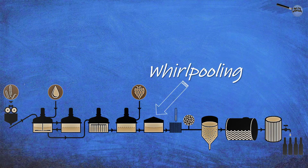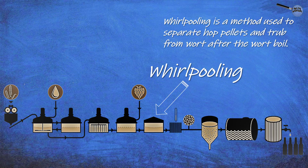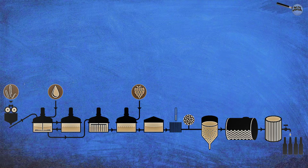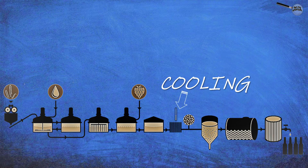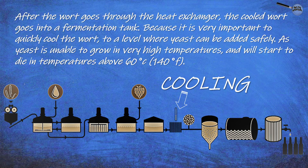Whirlpooling is a method used to separate hop pellets and trub from the wort after the boil. After the wort goes through the heat exchanger, the cooled wort goes into a fermentation tank.